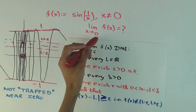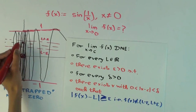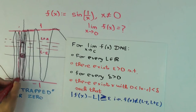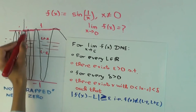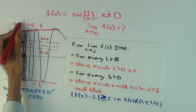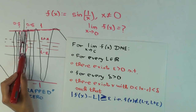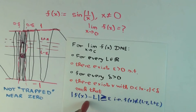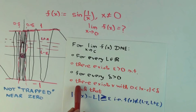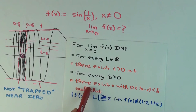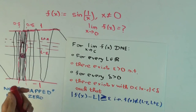The prover tries to pick a delta — find a neighborhood of c — such that in that neighborhood of c, the function is trapped within epsilon of L. In our case, c is 0. So the prover will try to pick a neighborhood of 0: from 0 minus delta to 0 plus delta. The prover is trying to say that for all x in here, the function value is within the strip. The skeptic, trying to disprove that, needs to pick an x such that the function lies outside.